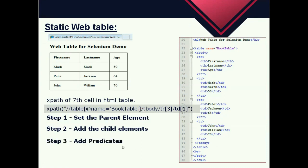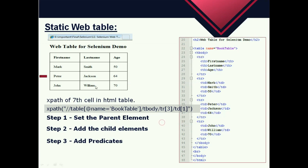The third step is to add predicates. The tbody element contains four tr tags. The tr tag creates rows in the table, so these four tr tags are children of tbody, or we can say they are siblings — siblings refer to child elements having the same parent. To access the third row, we can mention tr[3] inside the bracket. Predicates are numbers or HTML attributes enclosed in a pair of square brackets. If we don't mention any predicates — just tr with no bracket and no number — then XPath will access the first sibling by default.